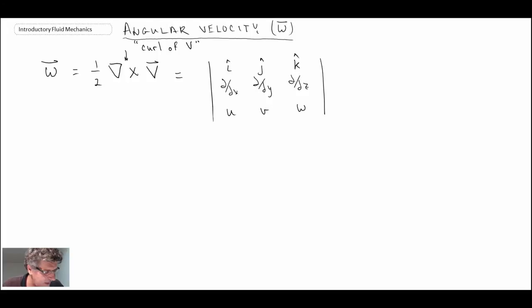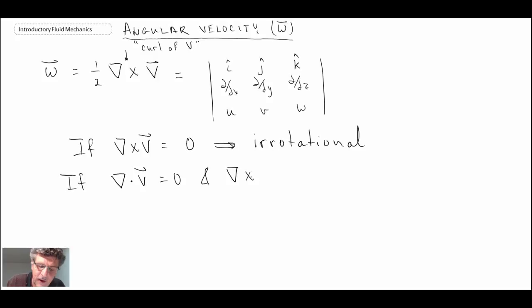which again is related to vorticity in a fluid flow. Now, if it turns out if del cross v is equal to zero, that is an indication of a flow, a special kind of flow, that we call irrotational. And if it turns out that if we have a flow where del dot v is equal to zero, and del cross v is equal to zero, that would be a flow that is incompressible and irrotational.